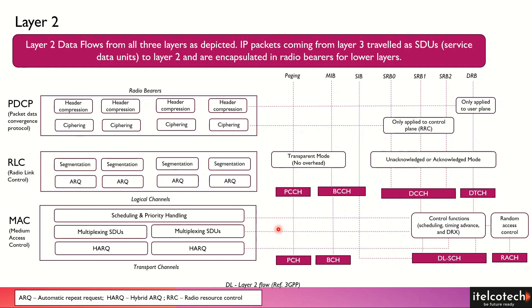Below RLC is the MAC layer, which is the Medium Access Controller. It has an important functionality related to scheduling resources across different users. Within a base station, the scheduler helps allocate resources efficiently. In the case of carrier aggregation, we can multiplex different SDUs and send them back to the physical layer. There is also an error detection and correction mechanism called Hybrid Automatic Repeat Request (HARQ) at this layer.